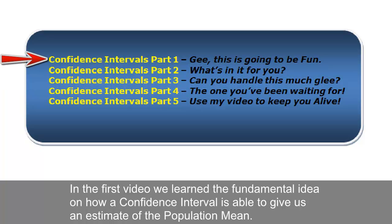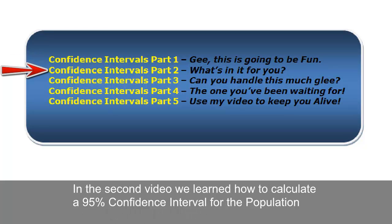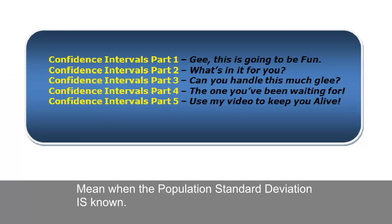In the first video, we learned the fundamental idea on how a confidence interval is able to give us an estimate of the population mean. In the second video, we learned how to calculate a 95% confidence interval for the population mean when the population standard deviation is known.